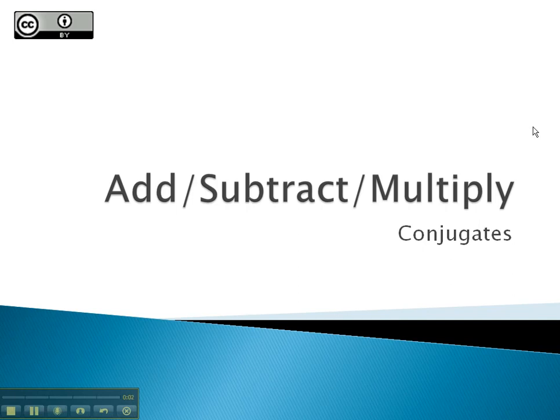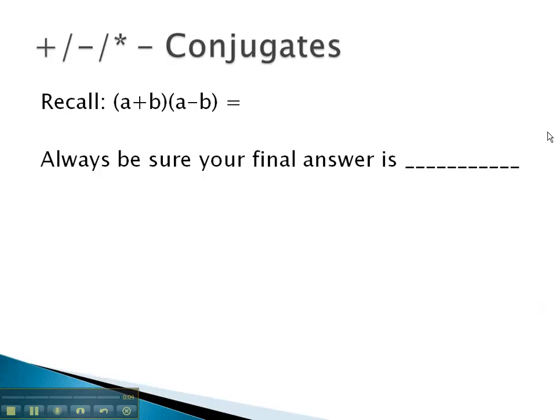In this video, we'll look at multiplying radical expressions that are called conjugates. A conjugate is a radical expression where the terms are exactly the same, except one has addition in the center and one has subtraction in the center.